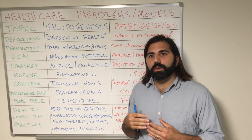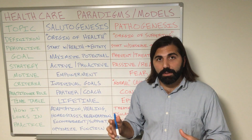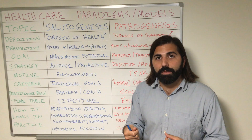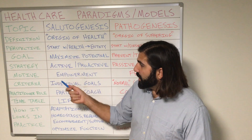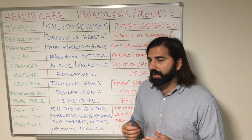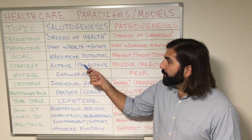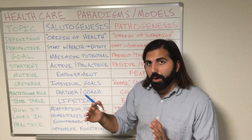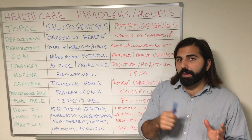A good analogy is a fire. If you want to keep that fire warm and lit, what do you have to do? You have to constantly activate it, be proactive, add fuel, and keep stoking that fire to keep it going. Same thing with our health. This creates a motivation behind the salutogenic model that's really one of empowerment — giving strength and power to that individual person to make proactive and active decisions. The criteria or benchmarks of the salutogenic model are going to be more based on individual goals instead of average values.